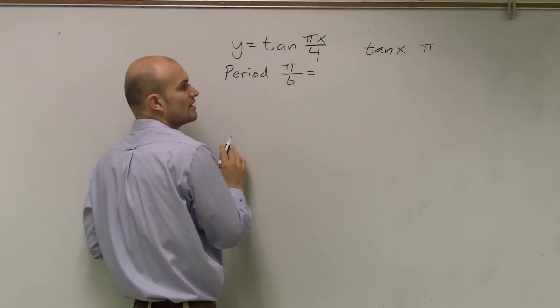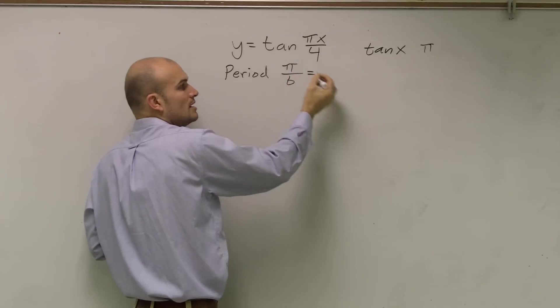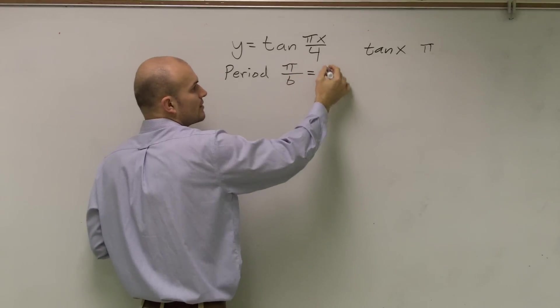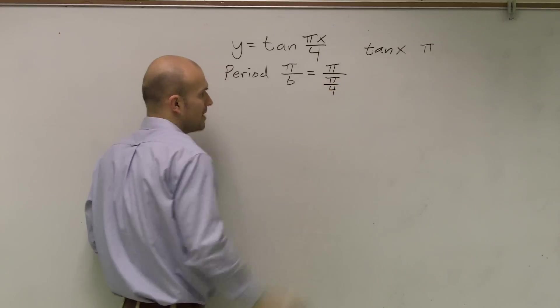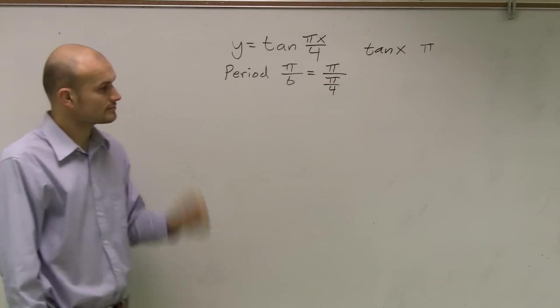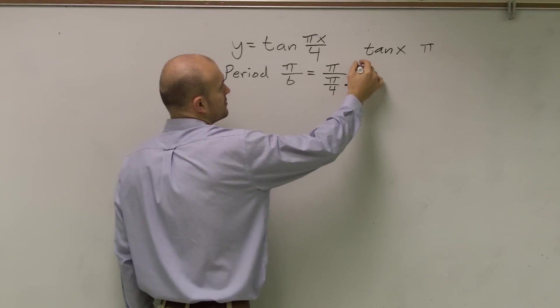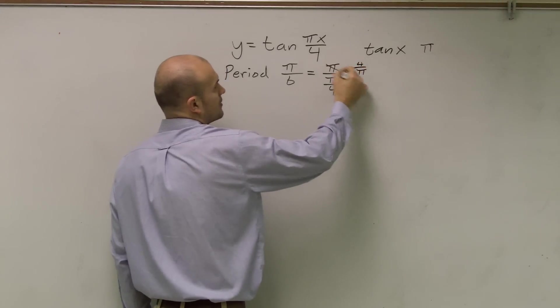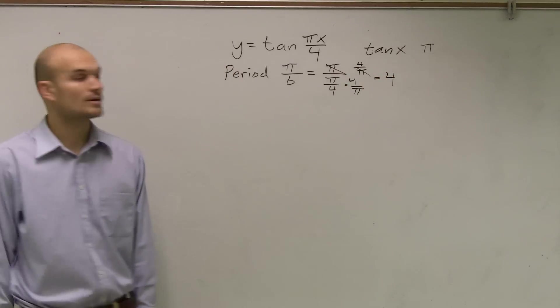So if I look at what is my π divided by b? Well, remember, b is your number that's in front of your x. So that's going to be π. And since π is divided by 4, my b is π divided by 4. So I have π divided by π divided by 4. So to get rid of a fraction on your denominator, multiply by the reciprocal. Your π's cancel out. And now we have a period of 4, all right?